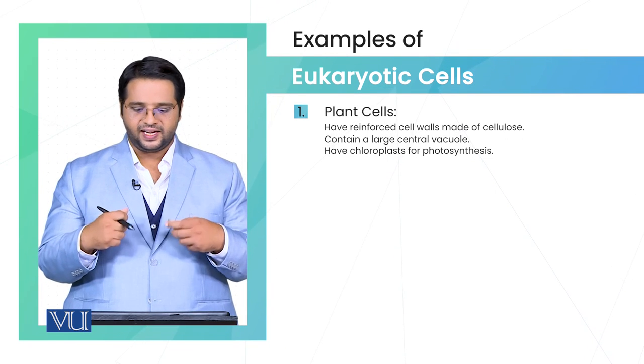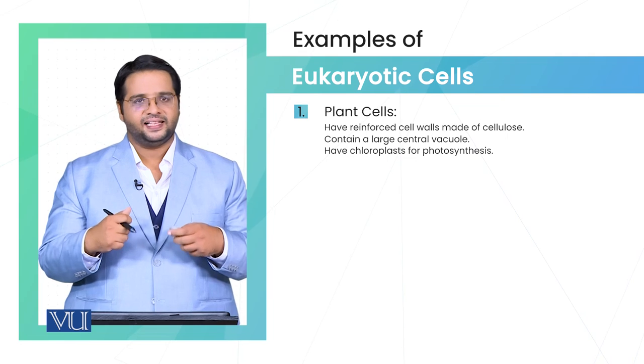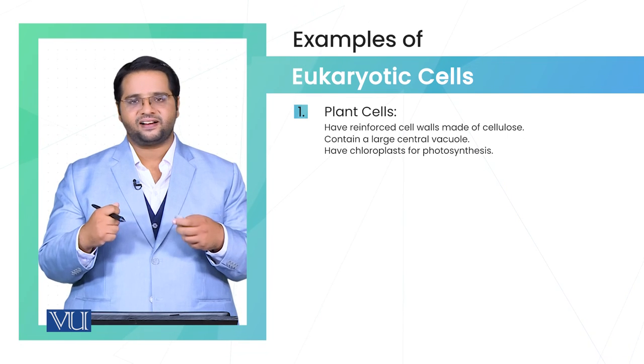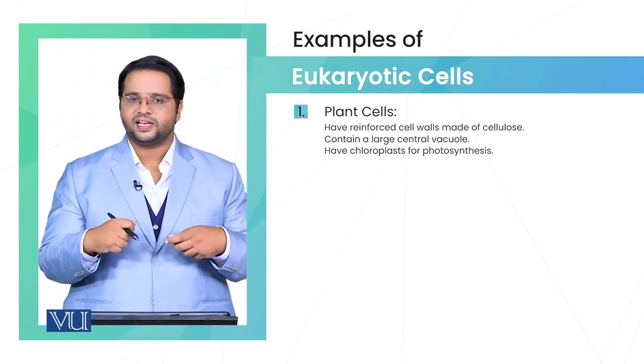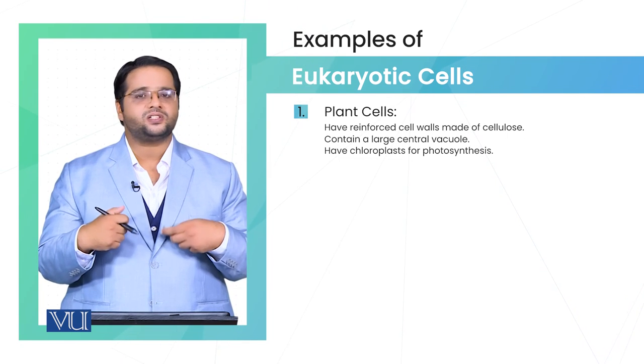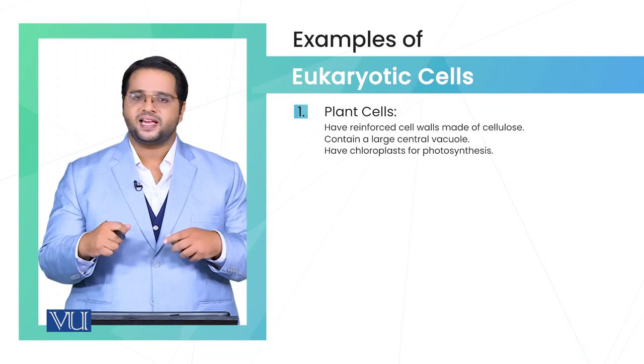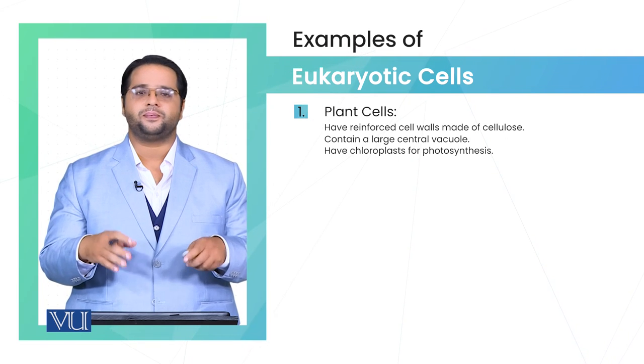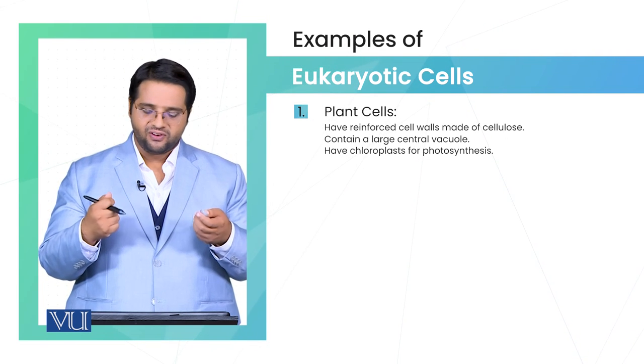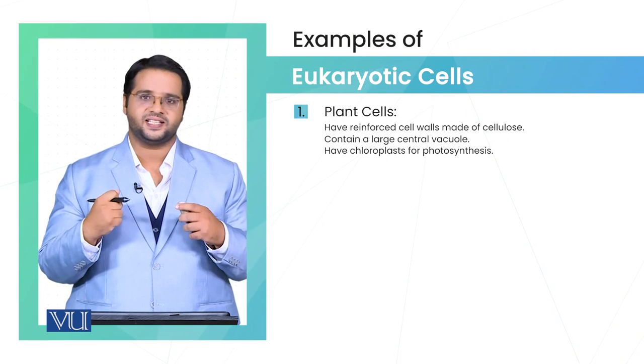Also in addition to that, plant cells have a large central vacuole and the chloroplast, which are also lacking in the animal cell. Chloroplast is important for the process of photosynthesis.